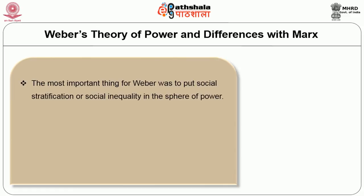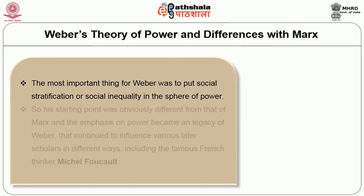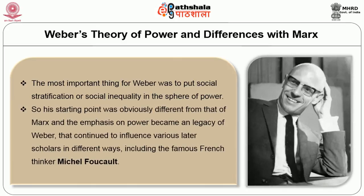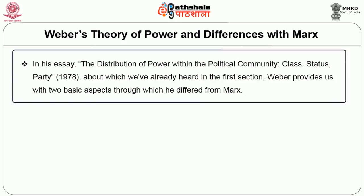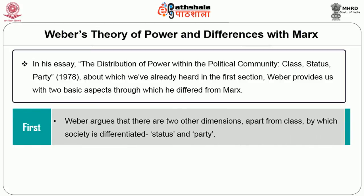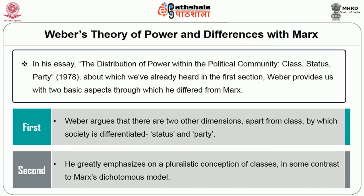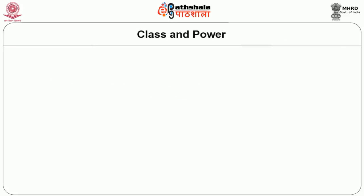Weber's theory of power and his differences with Marx: the most important thing for Weber was to place social stratification in the sphere of power. His starting point was obviously different from that of Marx, and his emphasis on power became a legacy that continued to influence scholars including Michel Foucault. In his essay 'The Distribution of Power Within the Political Community: Class, Status and Party,' Weber provides two basic departures from Marx. First, he argues there are two other dimensions apart from class — status and party. Second, he greatly emphasised a pluralistic conception of class, in contrast to Marx's dichotomous model.